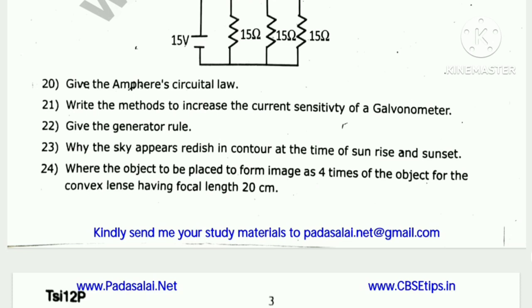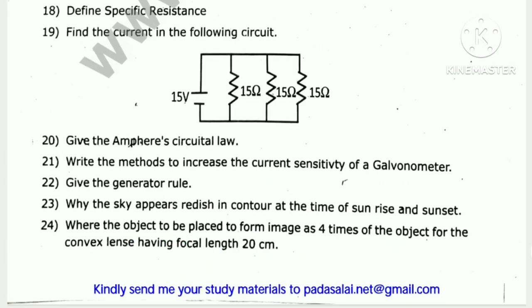Why does the sky appear reddish in colour at the time of sunrise and sunset? Where should the object be placed to form an image four times the size of the object for a convex lens having focal length 20 cm?